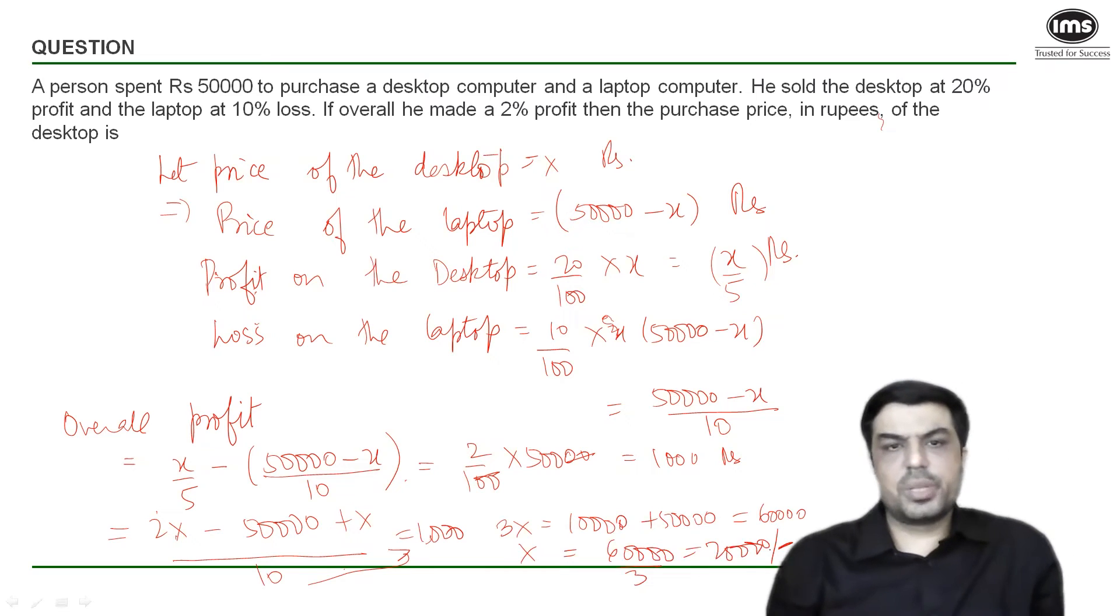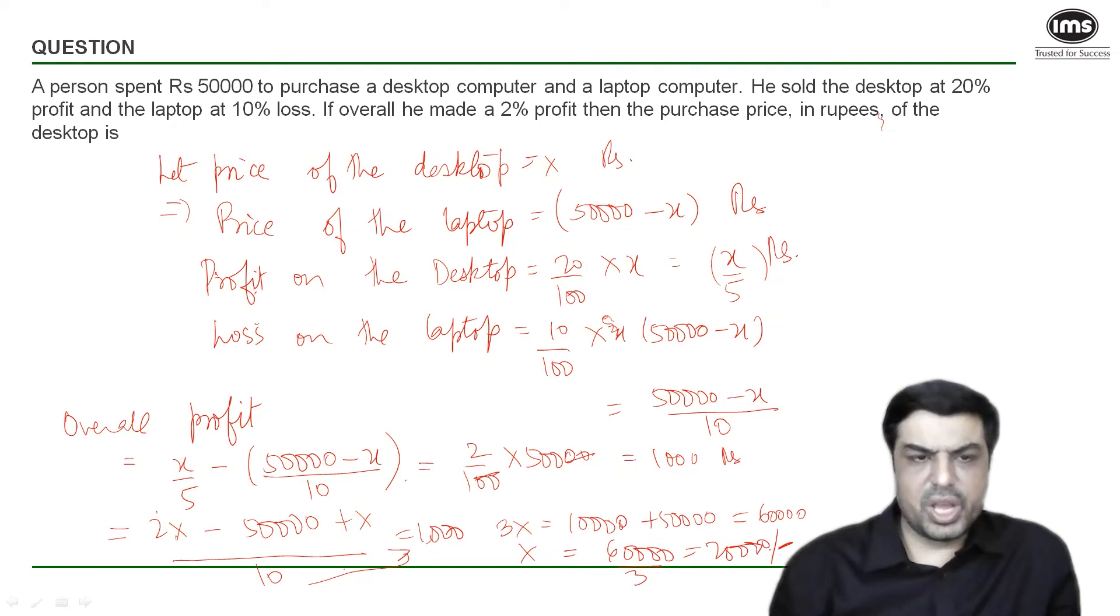x was the price of the desktop. That is what we were looking for, so the answer will be 20,000. So this was the equations method of solving the question. Now let us see another way of solving the same question.